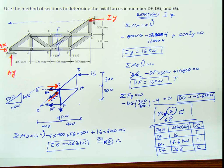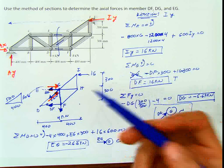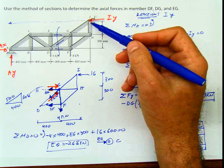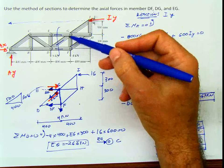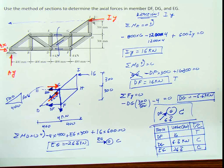And that's all for this problem. The majority, if not all, of the problems solved by the method of sections are solved in such an easy way. You just look for the appropriate section, cut there, and that gives you the solution. Otherwise, using the method of joints, I would have to solve four joints one by one. For those cases, I prefer the method of sections. OK, guys, this is all for this problem. Watch the next lecture, and thank you for watching.